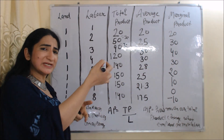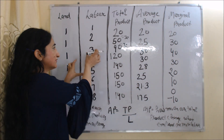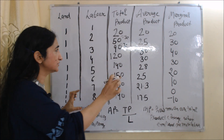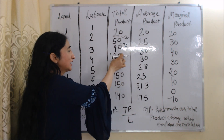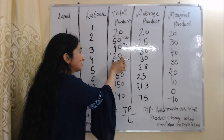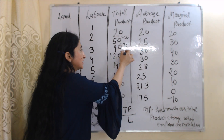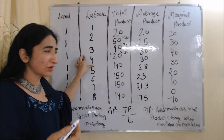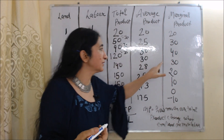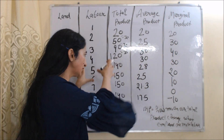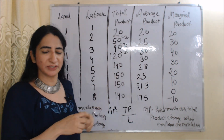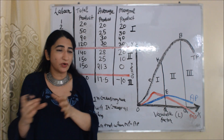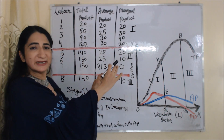When labor increases from 3 to 4, total product increases from 90 to 120, so 120 minus 90 = 30. This increase of 30 in total product when we add one more labor is our marginal product. We calculate marginal product the same way for all other units. Now let's look at the stages of this law using the table and diagram.